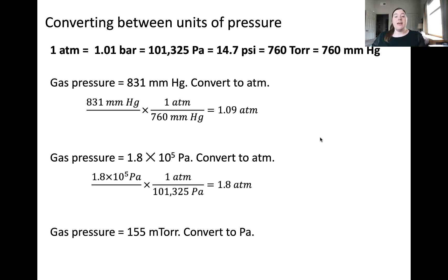Let's move on and look at pascal to atmosphere. We know from the conversion factors that there are 101,325 pascals per atmosphere. Calculating the value of 1.8 times 10 to the fifth pascal yields an answer of 1.8 atmospheres.